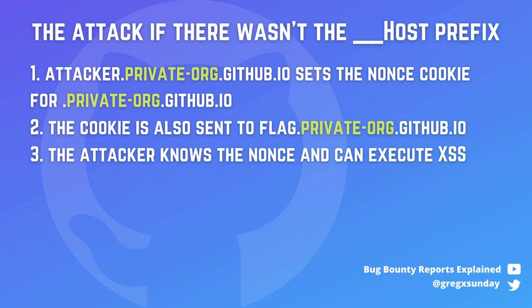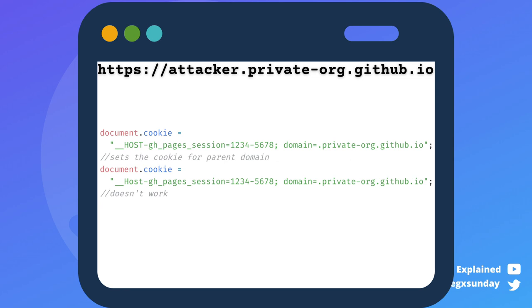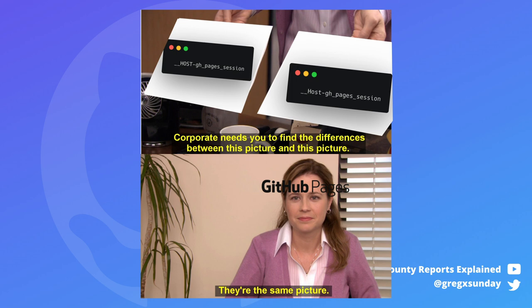So you need to trick the server into thinking that the cookie has the host prefix while the browser thinks it doesn't. Turns out the host prefix is case sensitive. If you try to set the host cookie to the parent domain, it won't work. But if you try the same with HOST using capital letters, it will work — because the browser doesn't consider this to be a valid host prefix. But it turns out that the server used by GitHub doesn't care about capitalization at all. While parsing cookies, it will strip the host part whatever the capitalization. So you can set the HOST cookie using capital letters: the browser will set it to the parent domain because it's not a valid prefix, while the server will also be happy because it thinks the cookie has the host prefix.